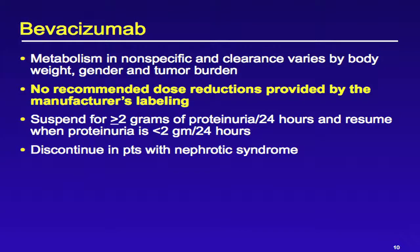Starting with Bevacizumab: the metabolism is nonspecific in clearance and varies by body weight, gender, and tumor burden. There are no recommended dose reductions provided by the manufacturer's labeling for either renal insufficiency or hepatic insufficiency. It does recommend to suspend for proteinuria, and discontinue in patients with nephrotic syndrome.